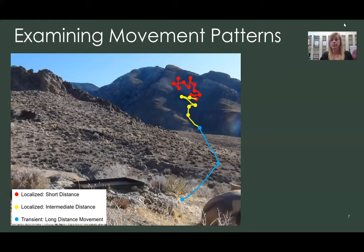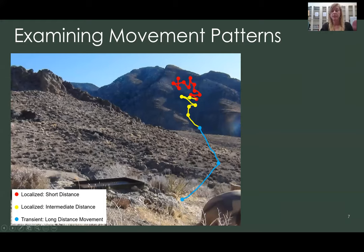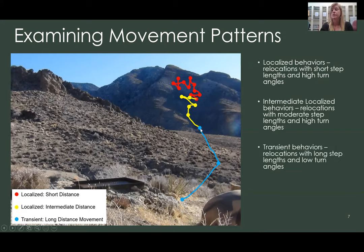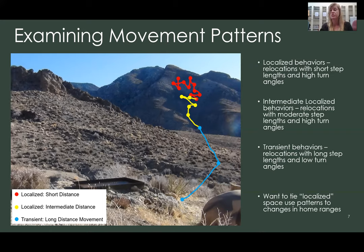We are examining the movement patterns of desert bighorn sheep in the Mojave Desert, and we have broken their movement into three categories: localized behaviors with short step lengths and high turn angles; intermediate localization with longer step lengths and narrower turn angles; and transient behaviors with long directed movements and low turn angles. We want to tie localized space use patterns to changes in home range size and how environmental variables affect movement and home range from year to year.